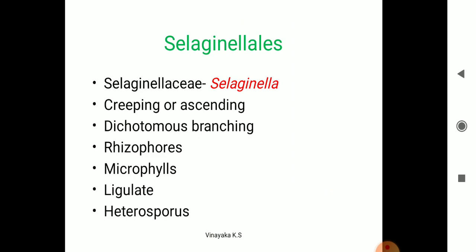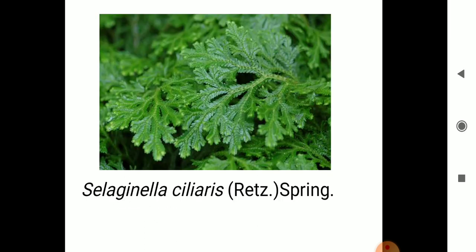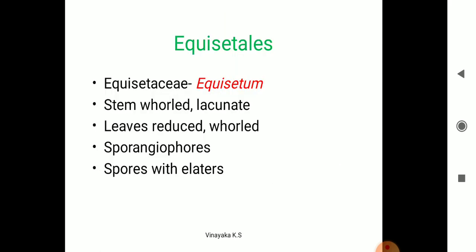Within Lycopodiales, Selaginellales are also present — example Selaginella. It is creeping in nature with dichotomous branching. Selaginella has a special structure called the rhizophore, which helps attach to the stem. They also have ligules and two types of spores — they are heterosporous. At the end of the leaf you can find the spore-bearing structure.